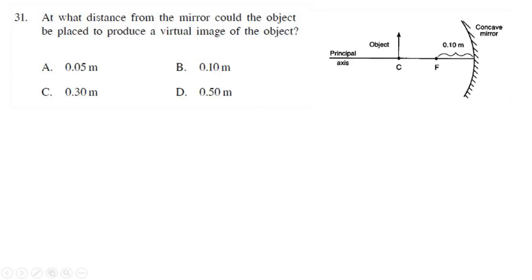If you want to make a concave mirror produce a virtual image — the image must be formed behind the mirror — then the object must be between the pole and focus. So the object distance must be less than 0.1 meter, and there is only one such option: option A.